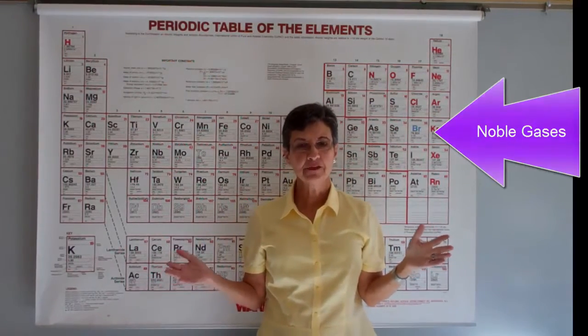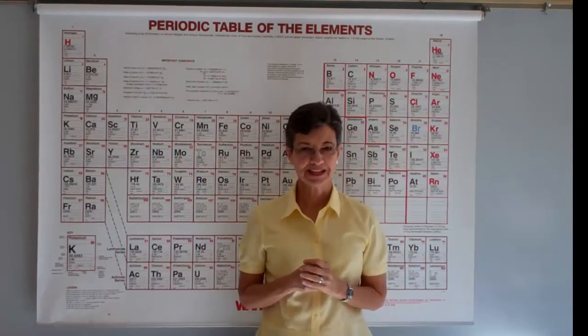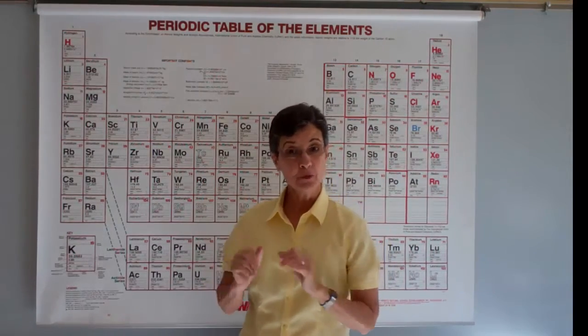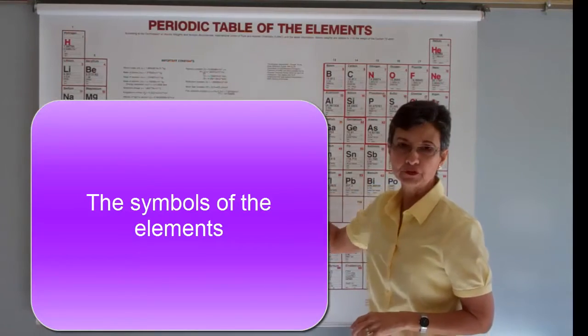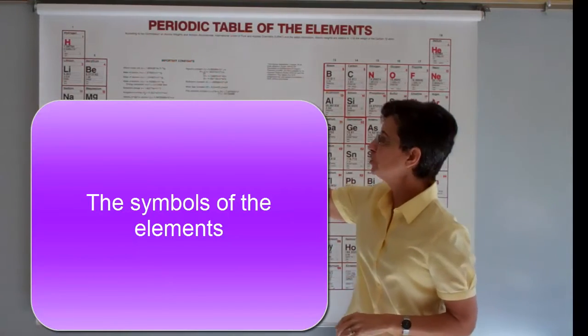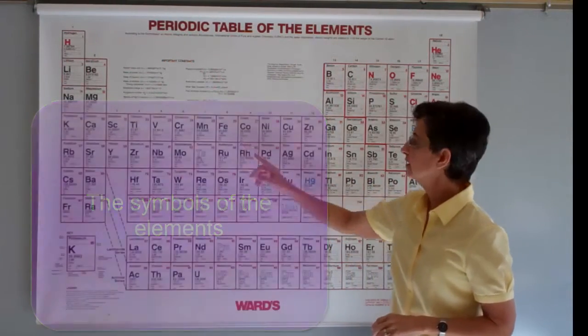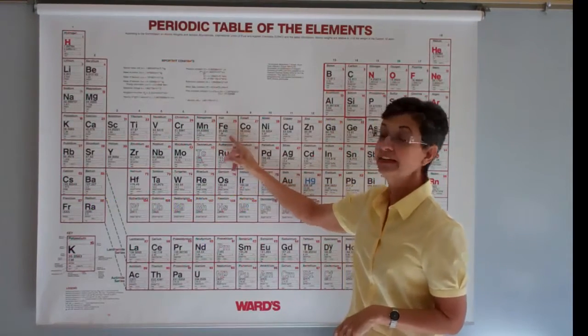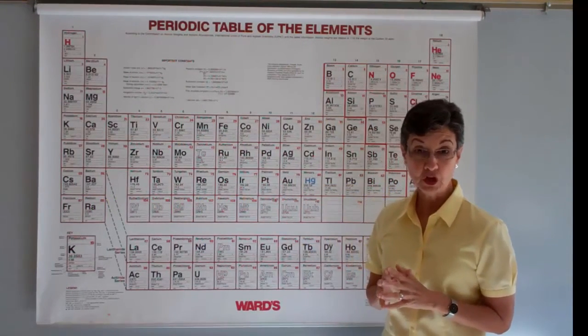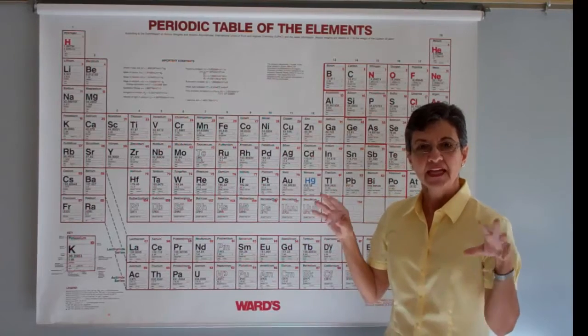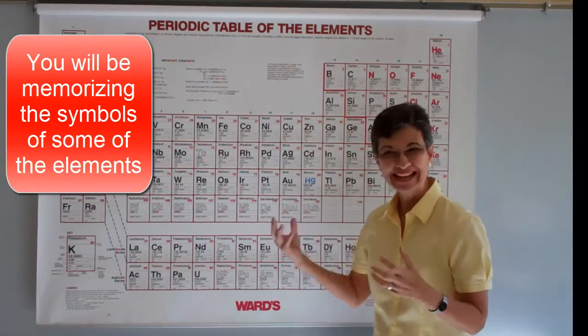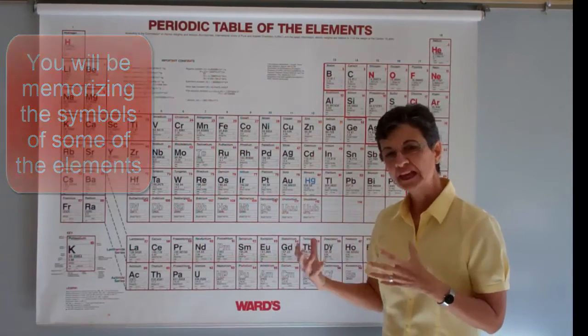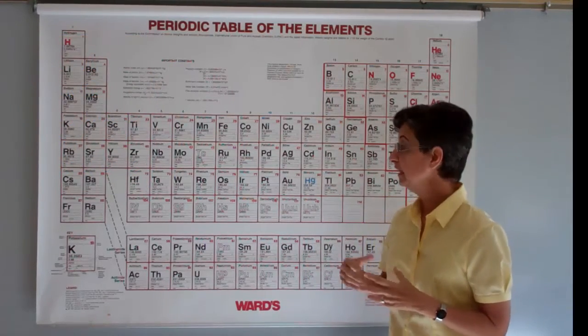So there you have the organization of the Periodic Table. One more thing we're going to talk about: the symbols. Each of these elements has, of course, a name and a symbol by which it goes. The elements are named after places, things, or even people.